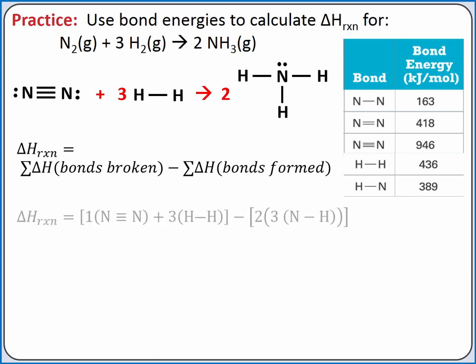We need to break one mole of nitrogen-nitrogen triple bonds, and three moles of hydrogen-hydrogen single bonds in our reactants. We form two moles of ammonia molecules, and each molecule has three nitrogen-hydrogen single bonds.